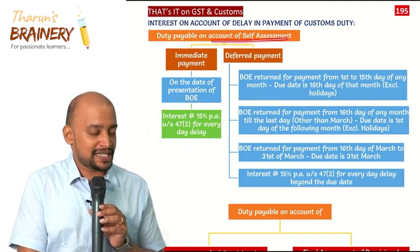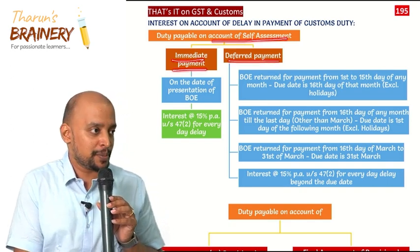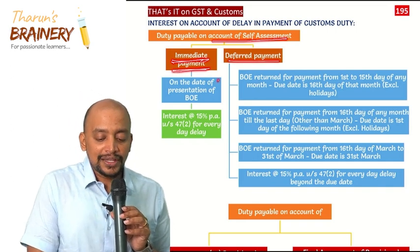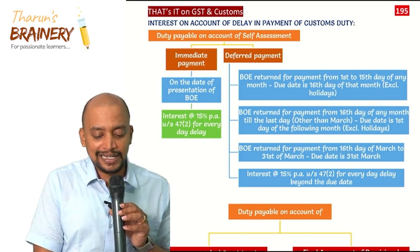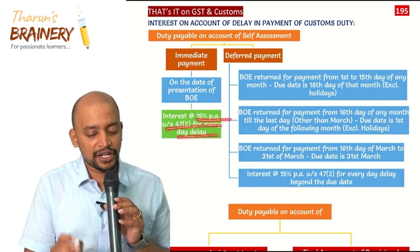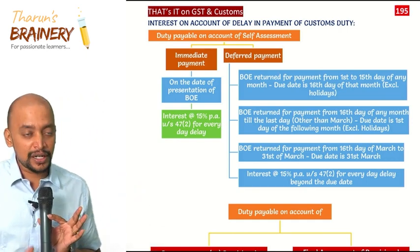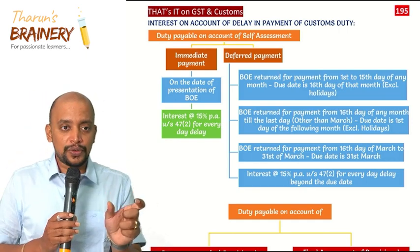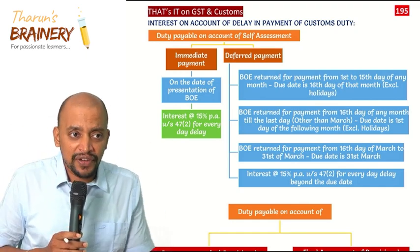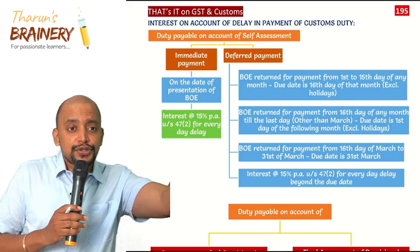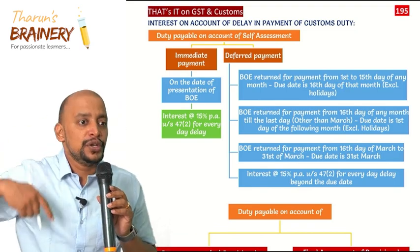For duty payable on account of self-assessment, there are two options: immediate payment option and deferred payment option. Under the immediate payment option, payment is made on the date of presentation of the bill of entry itself; otherwise interest at 15% per annum applies for every day of delay. Under the deferred payment option, customs duty can be paid at frequent intervals — if the bill of entry is acknowledged between the 1st to 15th of a month, payment is due on the 16th working day of that month.